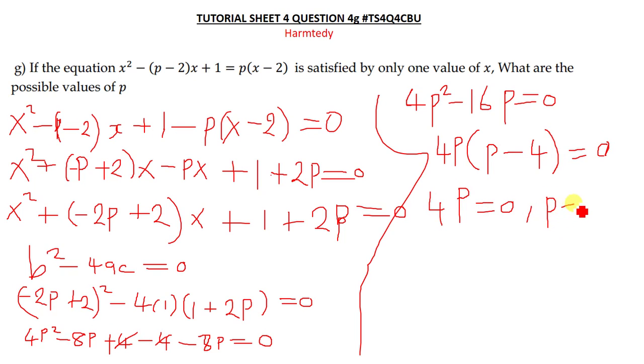p minus 4 is equal to 0. So from there you can say p is therefore equal to 0, and then this p is also equal to, when you take this 4 to the other side of the equal sign, it becomes positive 4. So these are the possible values of p.